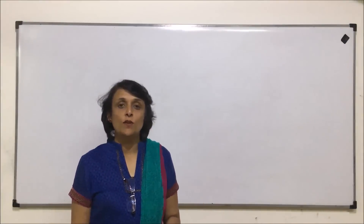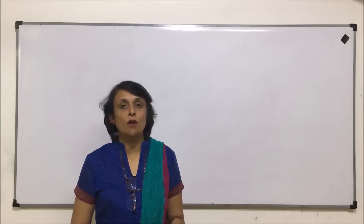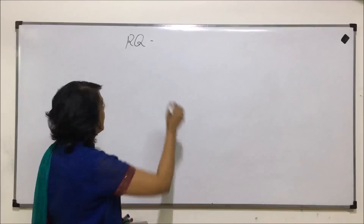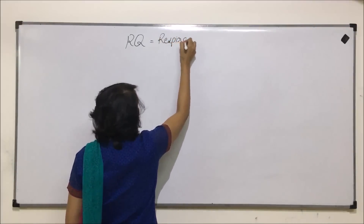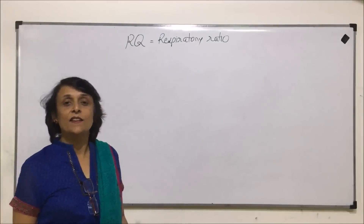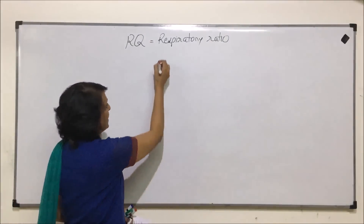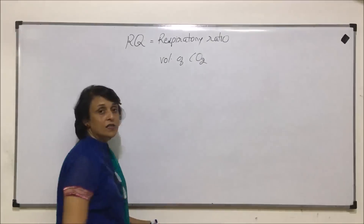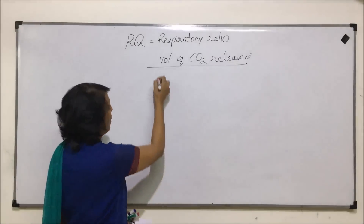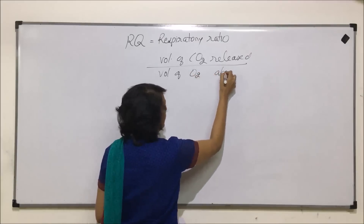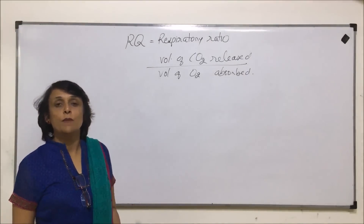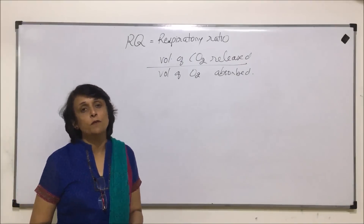We are on the last video of cellular respiration and the topic we are discussing is respiratory quotient or RQ. It is also known as respiratory ratio. It is defined as the ratio of the volume of carbon dioxide released to the volume of oxygen absorbed during respiration. RQ is calculated for a particular substrate.